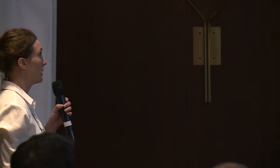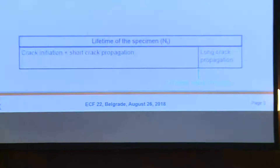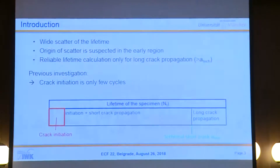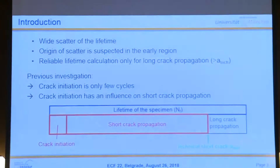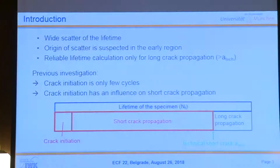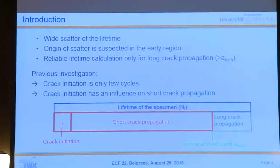If you look at the total lifetime of the specimen, it can be divided into crack initiation and short crack propagation, and then long crack propagation. We know we have a wide scatter, which has its origin in the short crack initiation and short crack propagation. Previous investigations show that crack initiation occurs just in the beginning, in the first cycles, and the main part of the second lifetime is short crack propagation. So it makes sense to look at this section and correlate it with the fracture surface and the origin of the scatter.